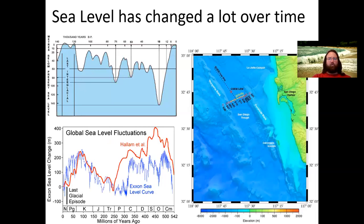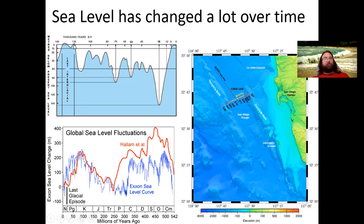Sea level has changed quite a bit, and the further back in time we go, the less certain we are. Looking at the upper graph of sea level over the last 100,000 years, as recently as 18,000 years ago sea level was 140 meters — almost over 400 feet — lower than at present. During the last interglacial period, sea level was actually a little higher than present. Looking back even longer, there have been periods when sea level was several hundred meters higher, and a few times slightly lower, such as at the end of the Permian. The further back in time, the less the experts seem to agree.